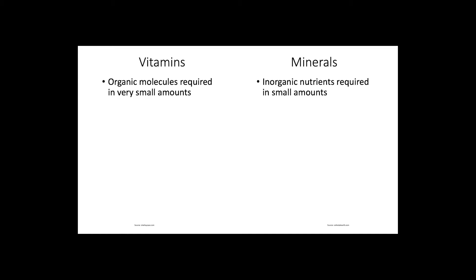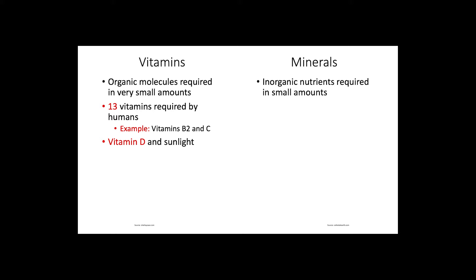Next, we have vitamins and minerals, both required in small quantities. There are 13 vitamins required by humans, including the famous vitamin B2 and vitamin C, both of which are water-soluble. There are also fat-soluble vitamins like vitamin A, which aids in vision, and vitamin D, which has variable requirements given that our bodies can synthesize this vitamin when exposed to sunlight, thus reducing the dietary need.